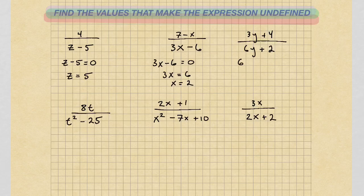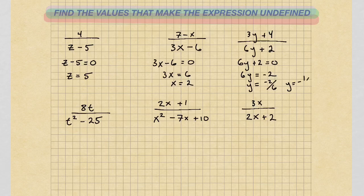For the next one, we have 6y plus 2 equals 0. Subtracting 2 from both sides, we have 6y equals negative 2. Dividing by 6, we have y equals negative 2 over 6, or y equals negative 1 third. So if I plug in negative 1 third into the denominator, it's going to be equal to 0, therefore undefined.